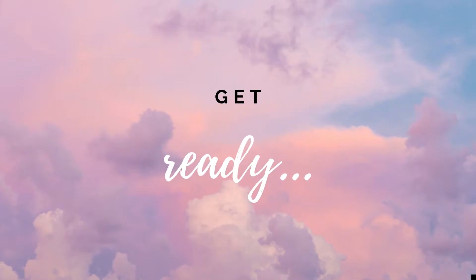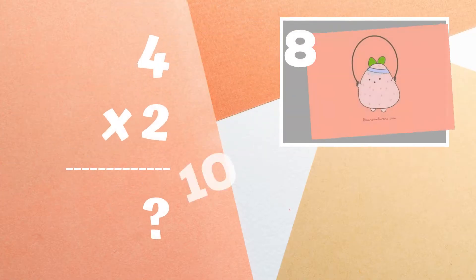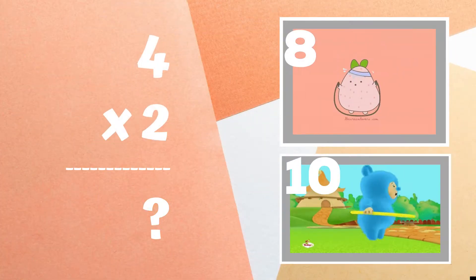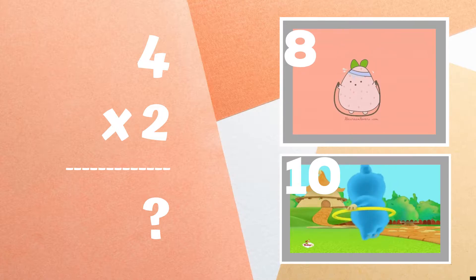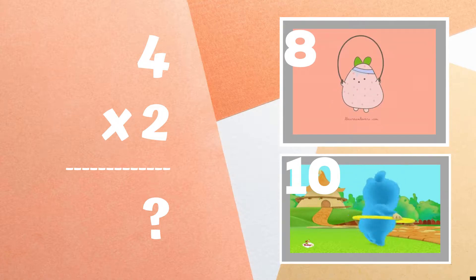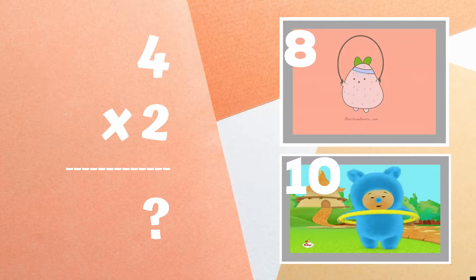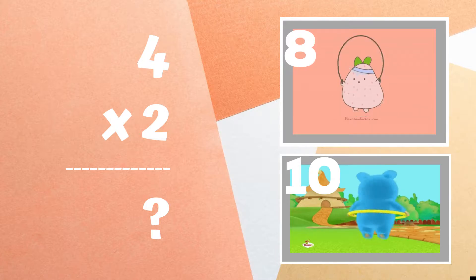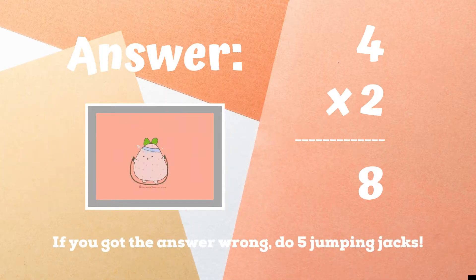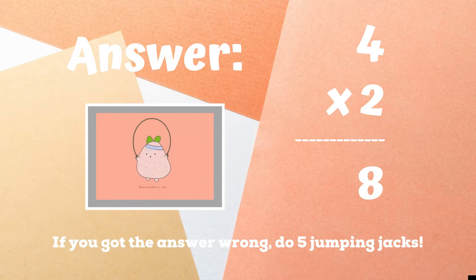All right, it's time to play for real now. Get ready. Four times two equals — copy the exercises next to the number you think is correct. Is it eight or is it ten? If you were jumping rope and guessed the answer eight, correct — you got it right. But if not, you have five jumping jacks to do until the next round.